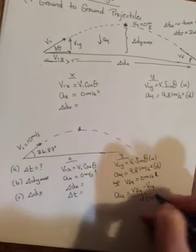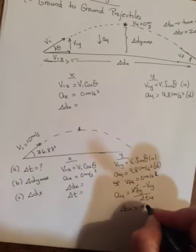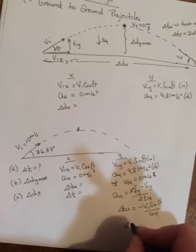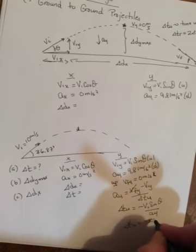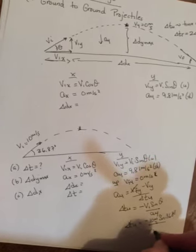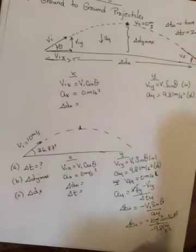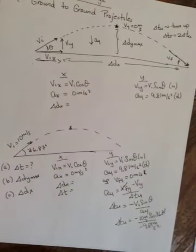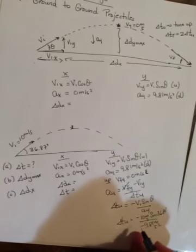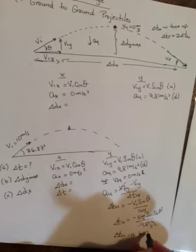And if we're looking at up, put a U there and cross this out. And then you can solve for delta T U. It'll just be negative VI sine theta over AY. So it will be negative 10 meters per second sine of 36.87 divided by negative 9.81 meters per second squared. So the negative on the top is from the subtracting in the equation. And the negative on the bottom is because gravity is acting down. Sine of 36, that's 6. 6 divided by 9.81.